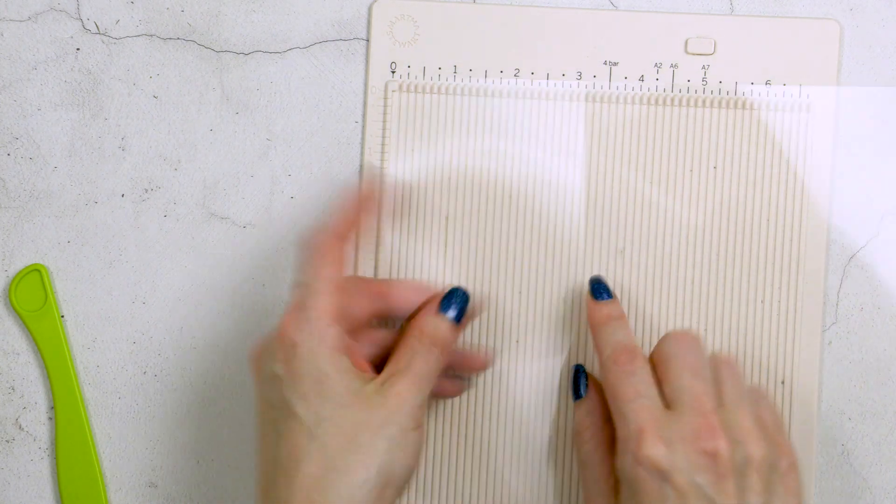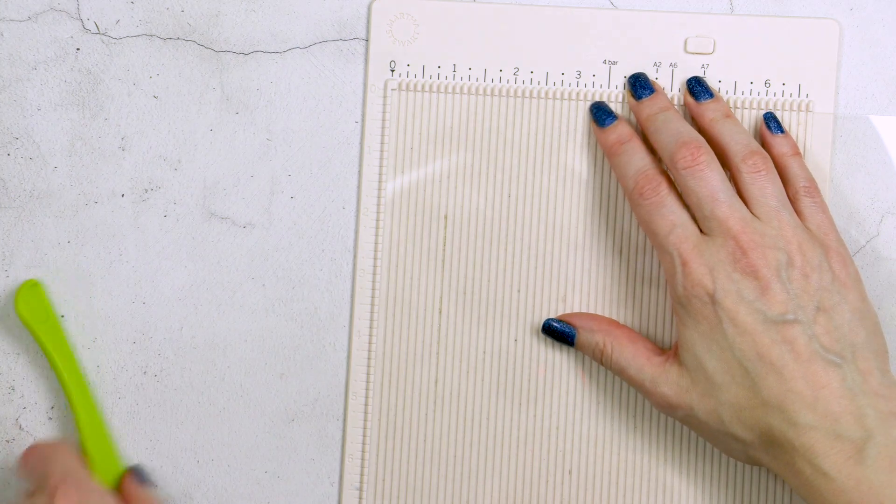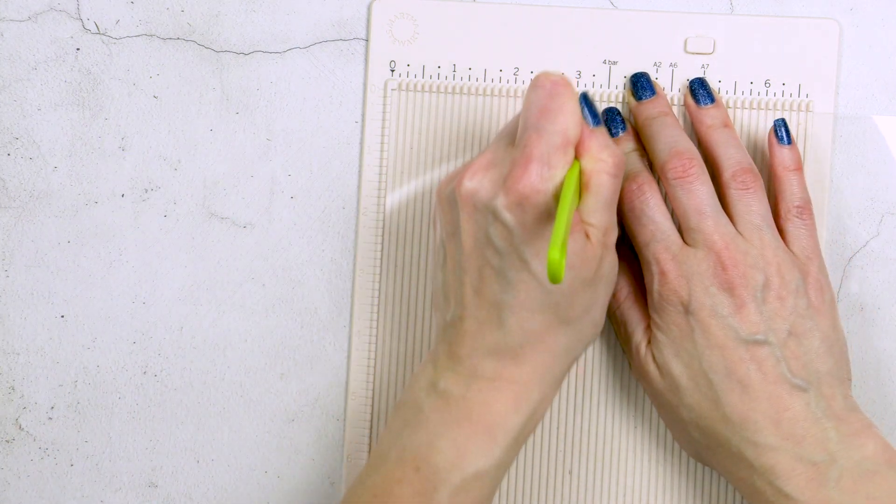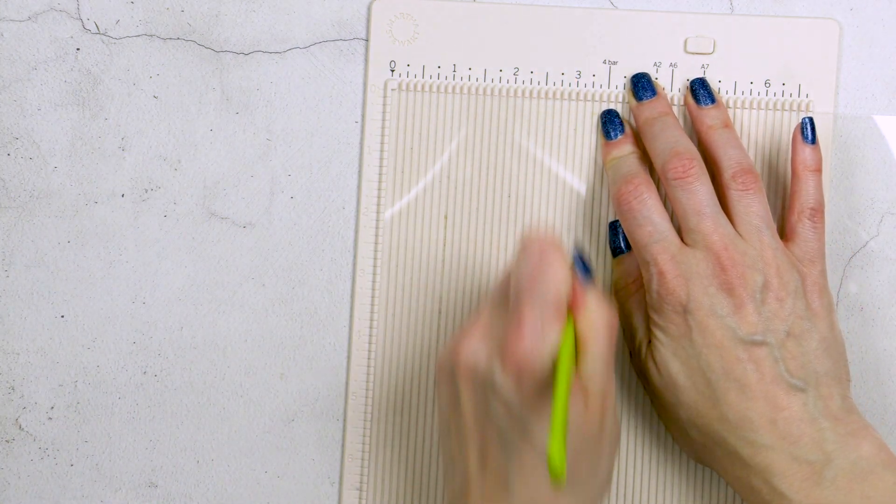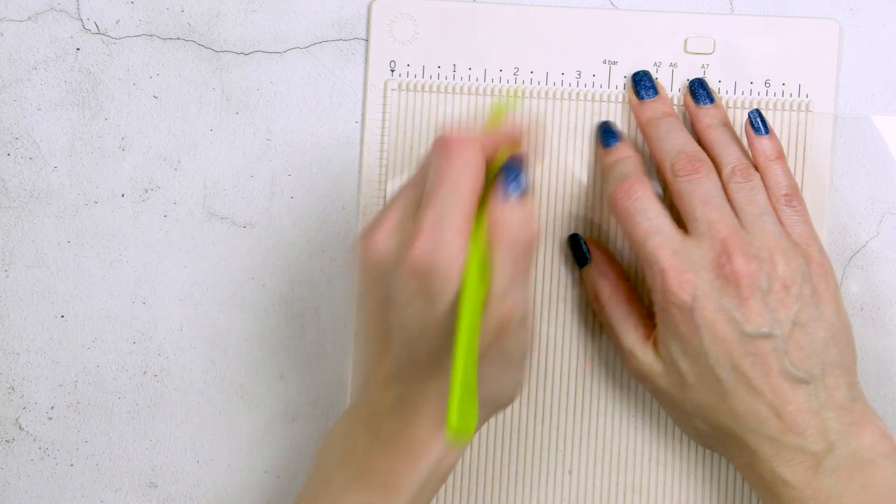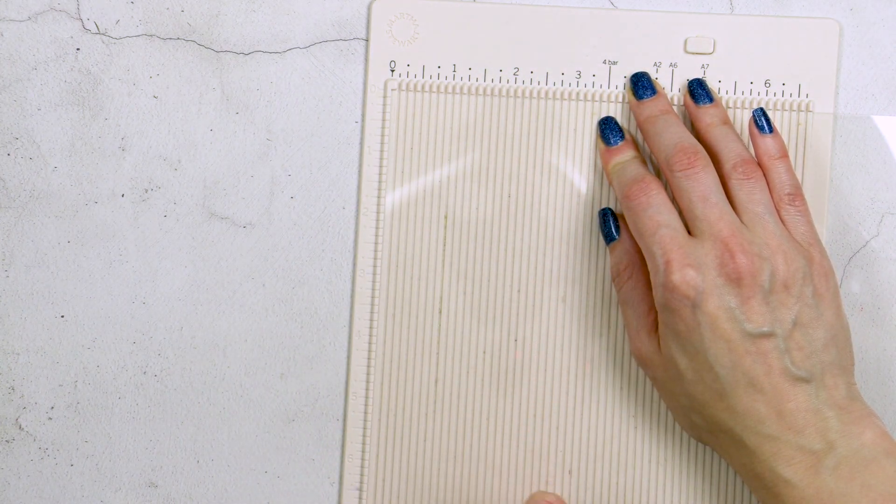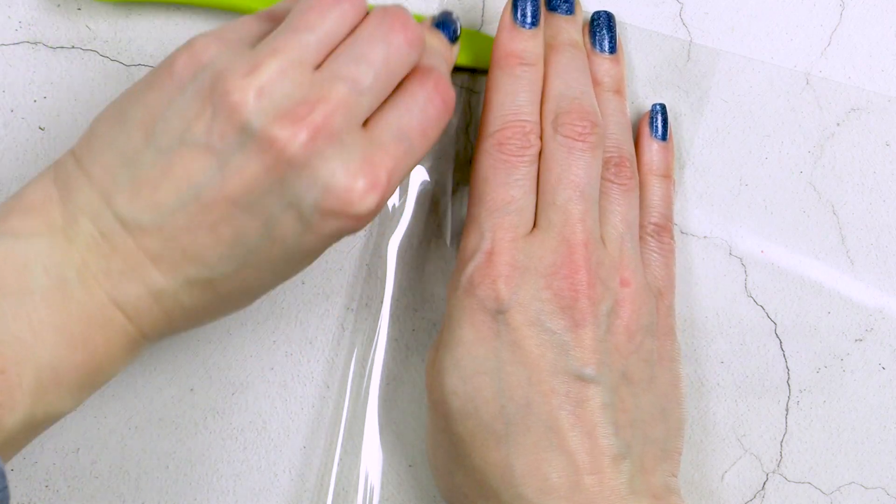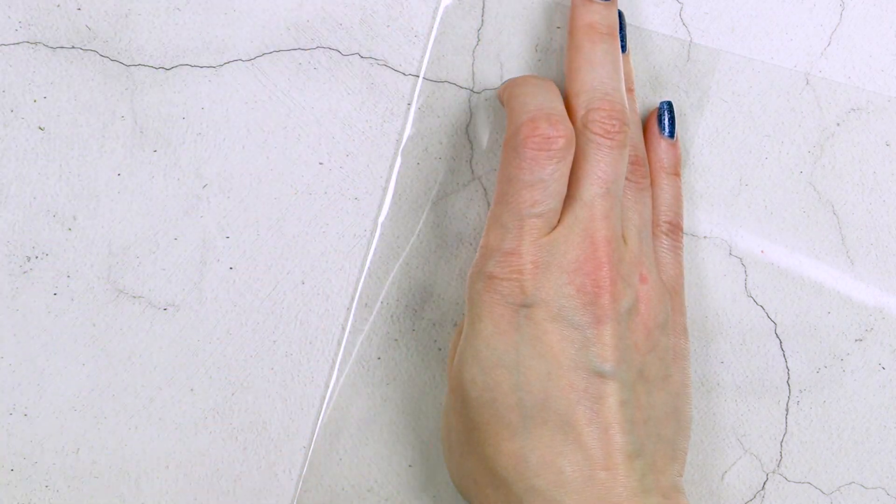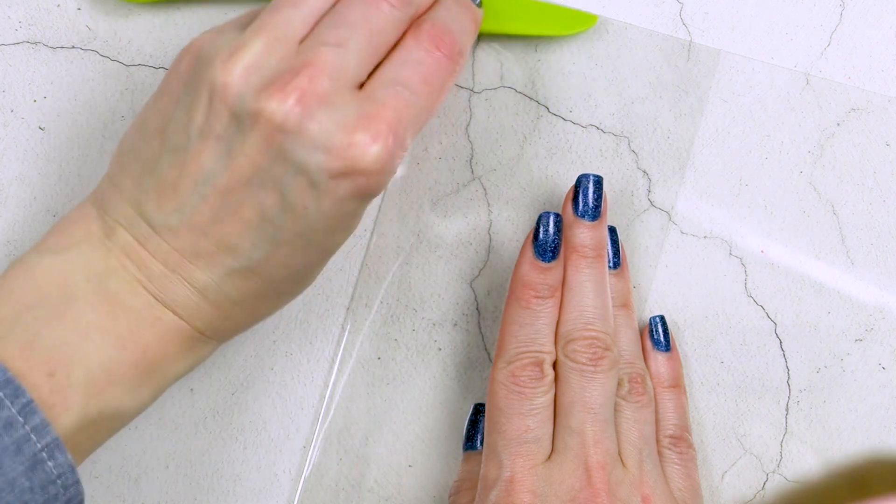When you want to hot foil on your acetate, you also need to pick the right kind of acetate for the job. The kind of acetate that can withstand the heat from the glimmer hot foil system or another hot foil system and remain perfectly flat afterwards. Simon Says Stamp has the hot off the press heat resistant acetate in the store for you to try this technique with.